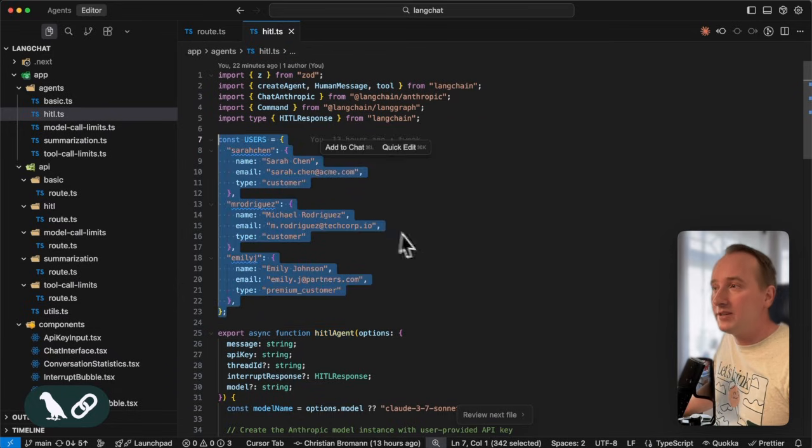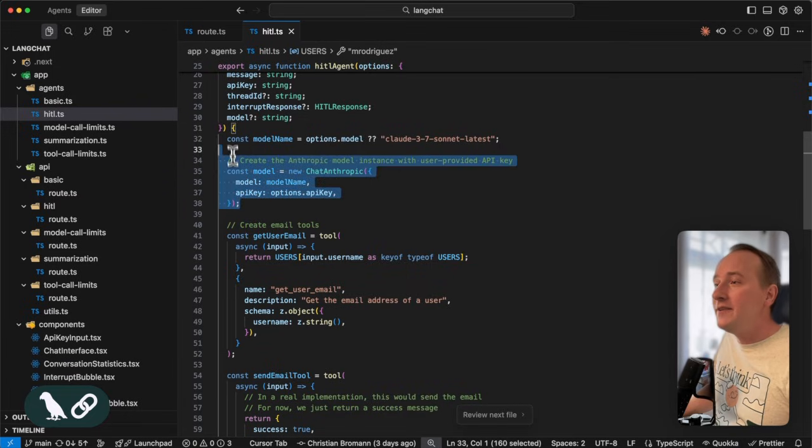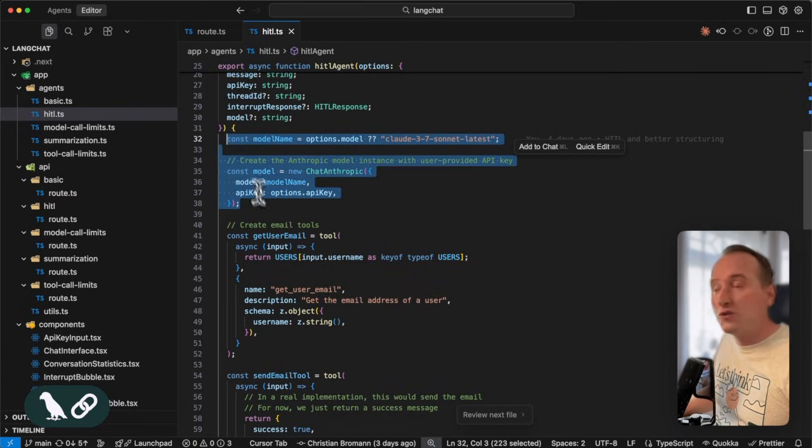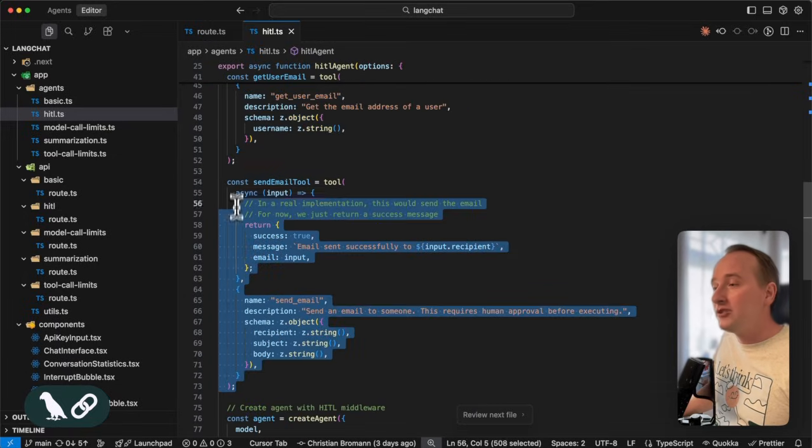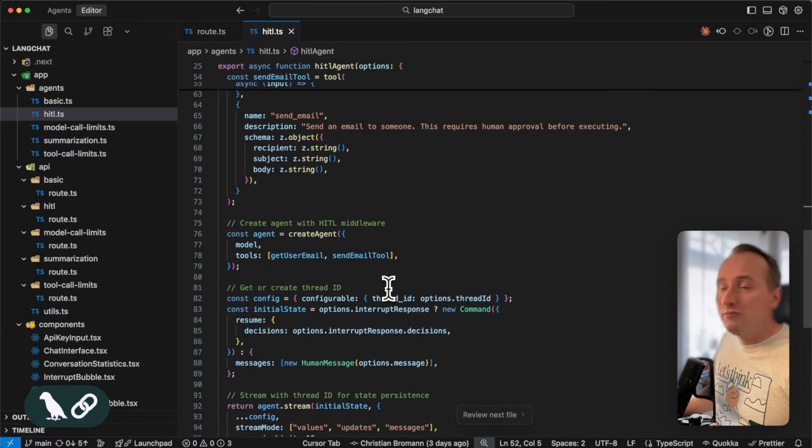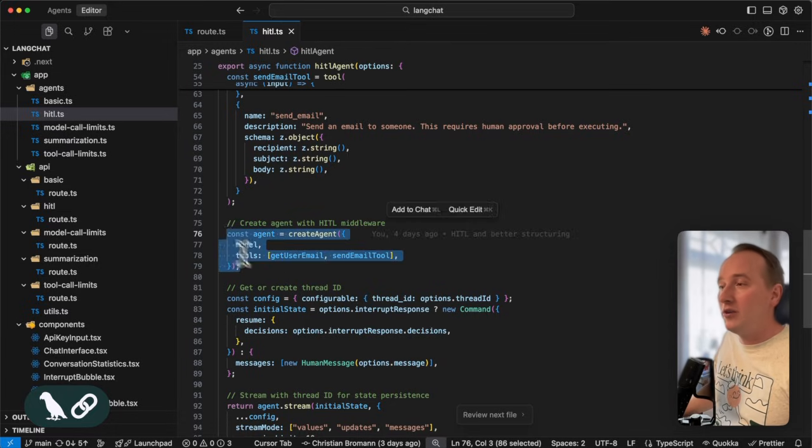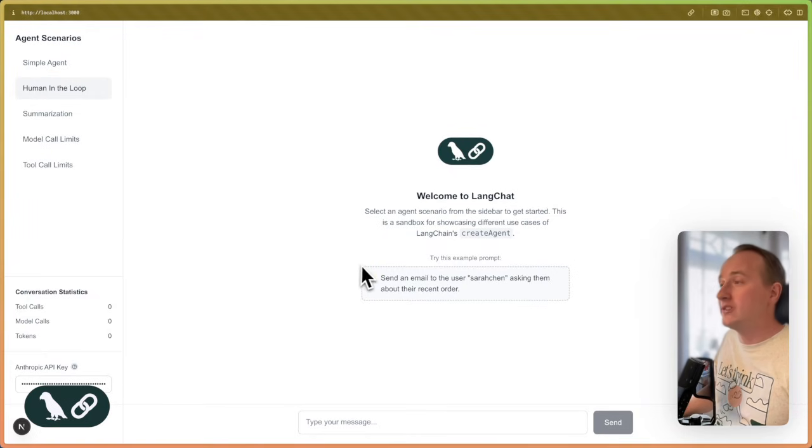Then all the magic happens in my human in the loop agent function. That agent function contains a user database in form of an object and then defines a model that we want to use for our agent, a tool that helps us to get the user email and a tool that helps us to send that user an email. All we need to do to create the agent is call the create agent and define a model and these tools. As you can see here, we don't define any middleware or human in the loop just yet.